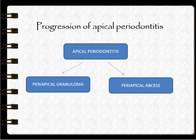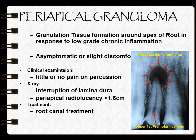Apical periodontitis can progress into periapical granuloma or periapical abscess. Periapical granuloma is a granulation tissue formation around the apex of the root in response to low-grade chronic inflammation. It can be asymptomatic or cause slight discomfort. On clinical examination, there may be little or no pain on percussion. Radiograph shows interruption of the lamina dura at the apical area and periapical radiolucency less than 1.6 cm. Treatment includes root canal treatment.